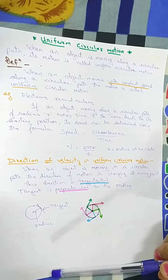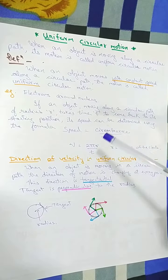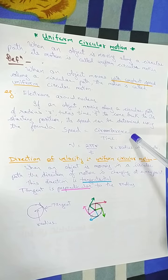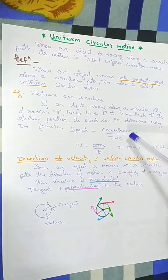We have seen speed equals distance upon time, but as it is circular, the distance from one point back to that same point will be the circumference. Hence we say speed equals circumference upon time.